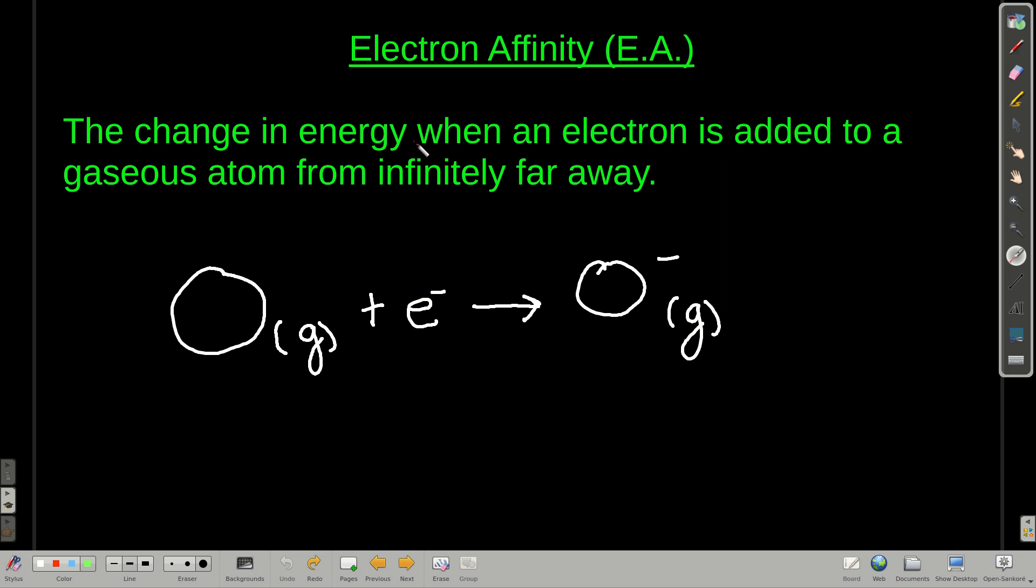It's the change in energy when you add an electron to a gaseous atom from infinitely far away, so there's no interaction before we start. For example, we could write an equation where we take a single neutral oxygen atom, add an electron to it from infinitely far away, and we get O minus with a negative charge. The change in energy associated with this process is the electron affinity of oxygen.